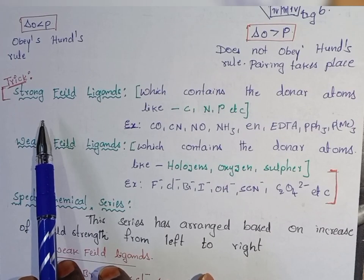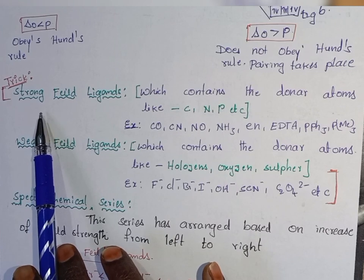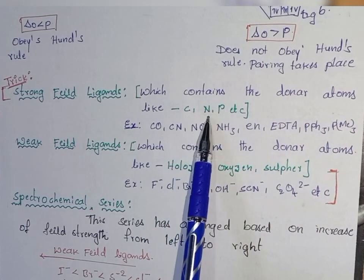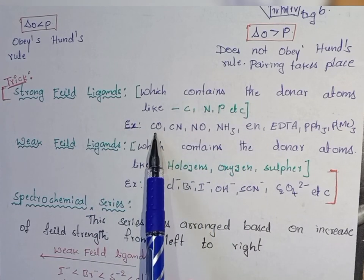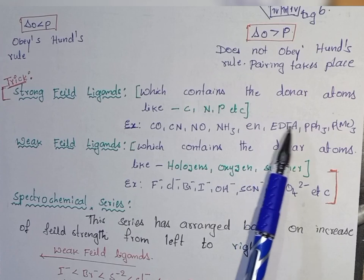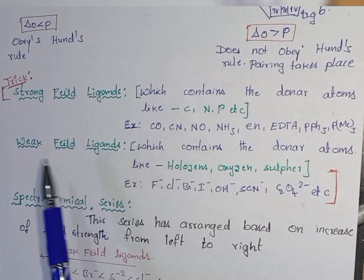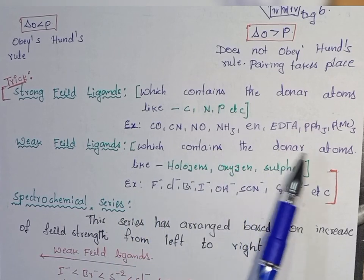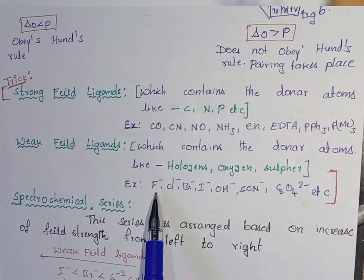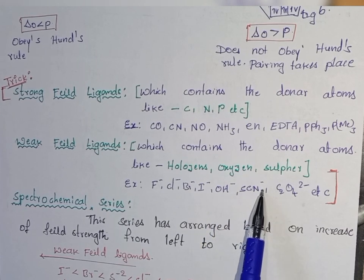Many students have doubts about how to remember strong field and weak field ligands. Here is a simple trick. Ligands which contain donor atoms like carbon, nitrogen, and phosphorus will be strong field ligands. Examples include carbonyl, cyanide, nitrosyl, ammonia, ethylenediamine, EDTA, and triphenylphosphine. For weak field ligands, those containing donor atoms like halogens, oxygen, and sulfur are weak field ligands — for example, all halogens and ligands containing oxygen or sulfur.